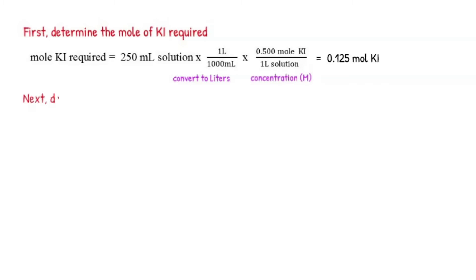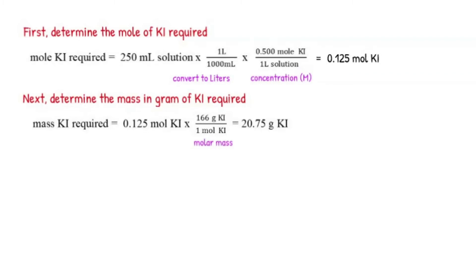Next, determine the mass in grams of potassium iodide required. The mass of potassium iodide in grams is equal to the mole of potassium iodide times the molar mass, the grams per mole of potassium iodide. This information you could determine from the periodic table.